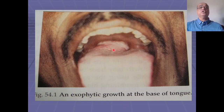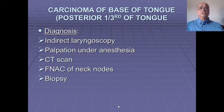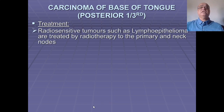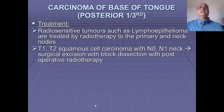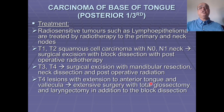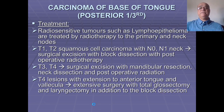Distant metastasis to bones, liver, and lungs may be involved. Diagnosis is confirmed by biopsy. For treatment: radiosensitive tumors such as lymphoepithelioma are treated by radiotherapy to the primary and neck nodes. T1–T2 squamous cell carcinomas with N0 or N1 neck: surgical excision with block dissection and post-operative radiotherapy. T3–T4: surgical excision with mandibular resection, neck dissection, and post-operative radiation. T4 lesions with extension to the anterior tongue and vallecula may require total glossectomy and laryngectomy in addition to radical neck dissection.